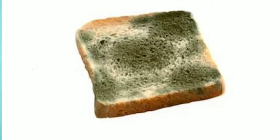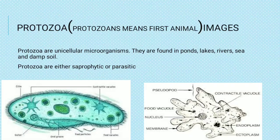Now we will move to the next microorganism: protozoa. The word itself tells us — protozoan means 'first animal.' Protozoa are unicellular organisms found in ponds, lakes, rivers, sea, and damp soil. Protozoa are either saprophytic or parasitic. As you have already learned in 7th standard, amoeba and paramecium are two examples of protozoa.